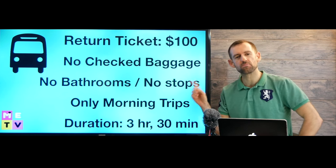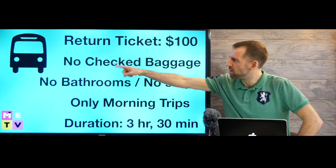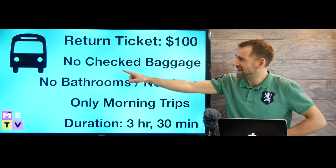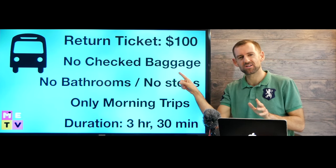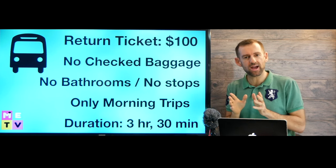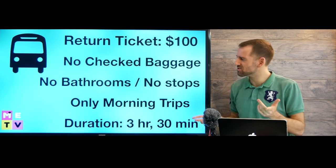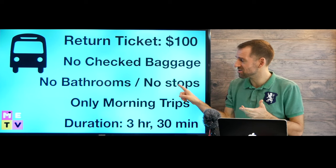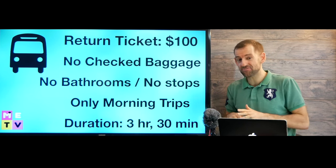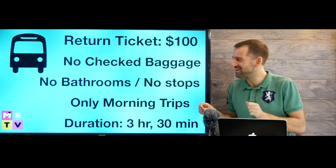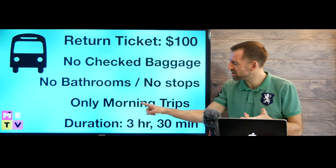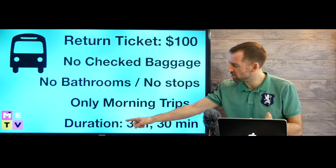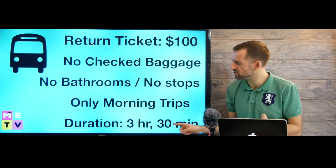Let's take a look at our first mode of transportation. It's a bus. The return ticket is going to cost a hundred dollars and there's no checked baggage allowed. That means you can just bring on a very small bag. You can't take a suitcase. There's no bathrooms and no stops. So if you need to use the bathroom, you just have to hold it. And there's only morning trips. The duration of the bus trip is three hours and 30 minutes.